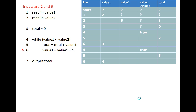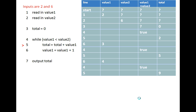Line six executes next — it is part of the while loop body as both lines are indented to the same level. It increments value one: looking up the trace table the last value was three, so value one becomes four. Back to line four: value one is four, still less than six, so the condition is true. Line five: total equals previous total of five plus current value one of four, giving nine. Line six: increment value one from four to five.